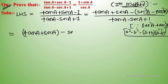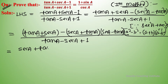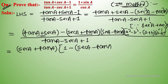So this becomes sec A plus tan A into sec A minus tan A upon tan A minus sec A plus 1. The common factor in the numerator is sec A plus tan A, and we take sec A plus tan A common, rewriting the remaining factor accordingly.